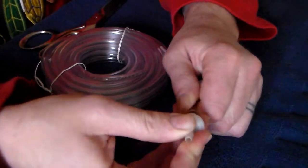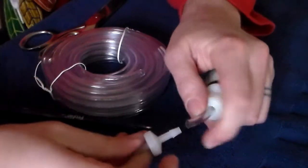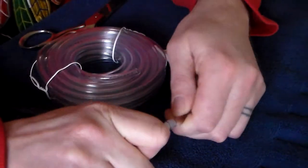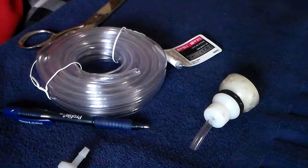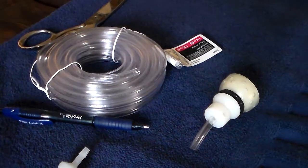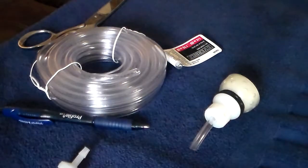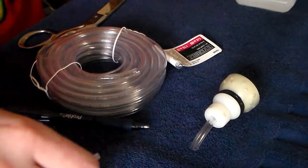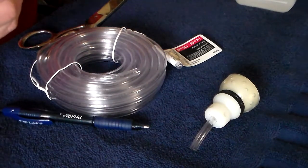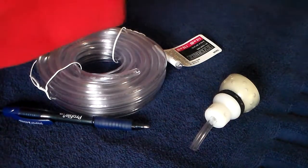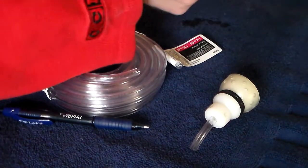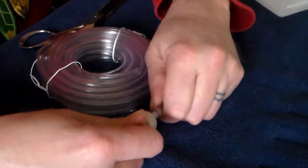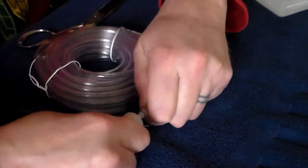Again, if this is snug, you can lube it with a little rubbing alcohol. Just get a little rubbing alcohol on there and you should be able to slide that in.